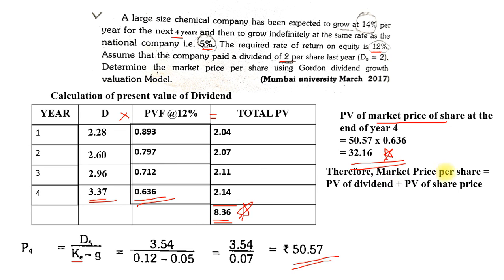Therefore, the market price per share is equal to PV of dividend, which is 8.36, plus PV of the share, which is 32.16. So 8.36 + 32.16 gives a total value of rupees 40.52. This is how you solve a sum based on Gordon's dividend growth valuation model. You first find the present value of dividends, then get the present value of the share, find the present value at the end of the last mentioned year, and finally add both to get the market price per share.